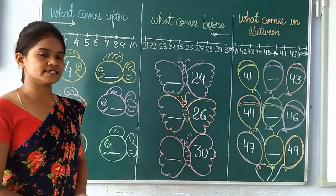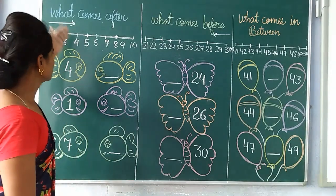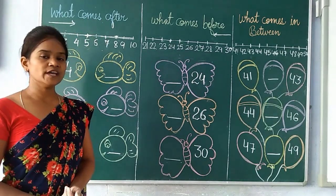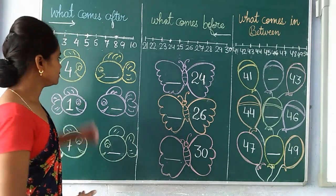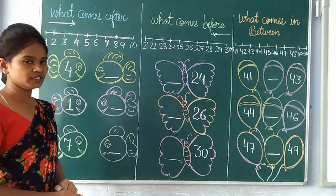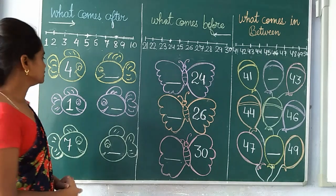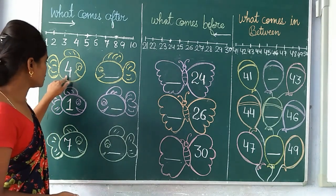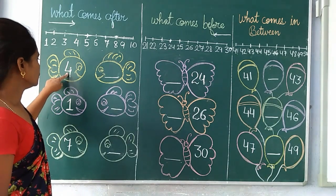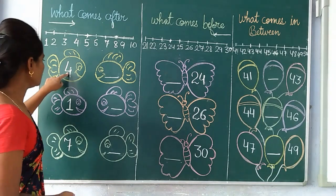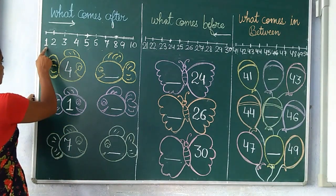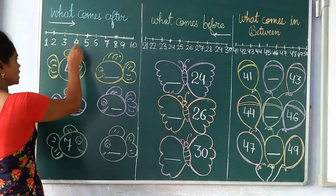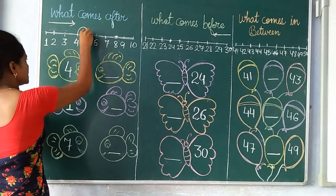Now we will learn about after. What do you mean by after number? When we count forward from the given number, we get the number after. Let's count forward from the given number 4. What comes after 4? We will count the number: 1, 2, 3, 4. What comes after 4? It comes 5.